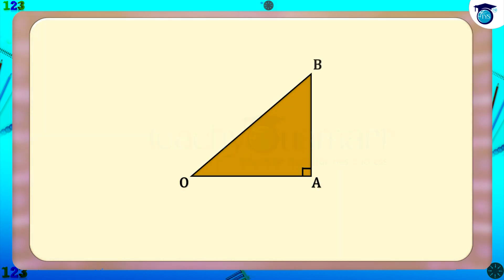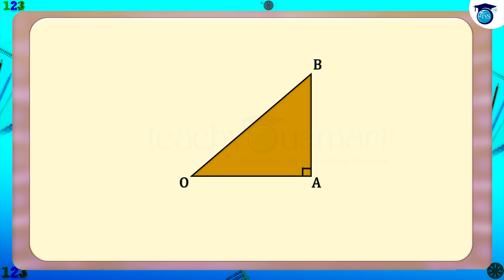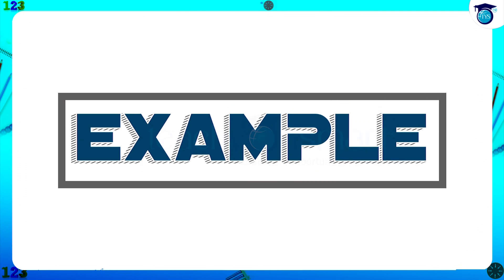If it is possible to take suitable measurements on the base and altitude of a right triangle so that the hypotenuse is √n, then we can apply this method to construct √n on the number line, where n is a positive integer. Let's see some more examples.